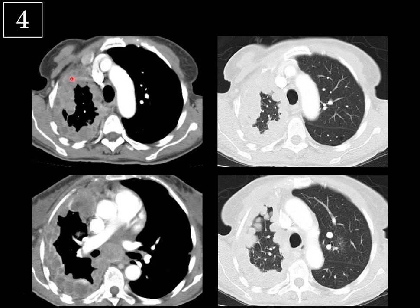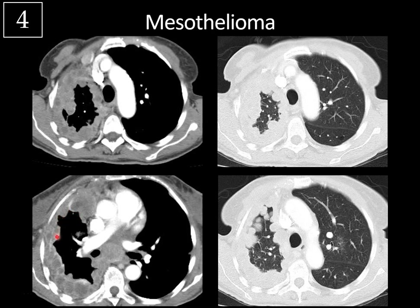You can see there's extensive irregular pleural thickening throughout that entire right hemithorax, and this is typical for mesothelioma, especially with that history of asbestos exposure. Features of malignant pleural thickening: if you ever see nodular thickening like in this case, that's concerning. If the thickness is greater than a centimeter, if it's circumferential, and also if it's abutting the mediastinal surface — any of those features are suspicious. Unfortunately, this patient has all of those features.